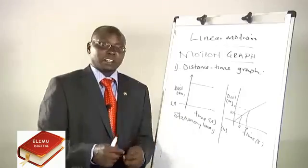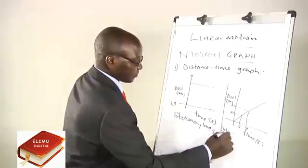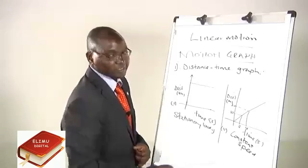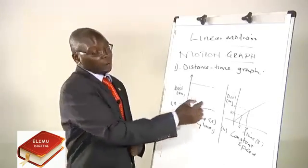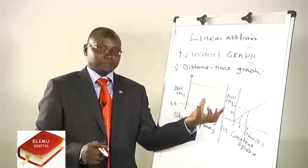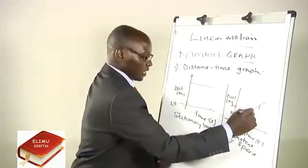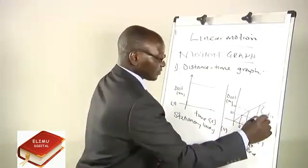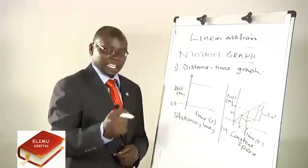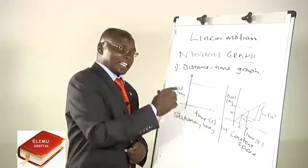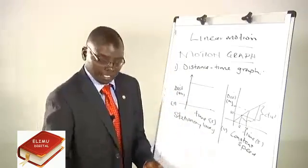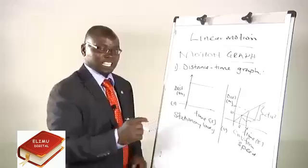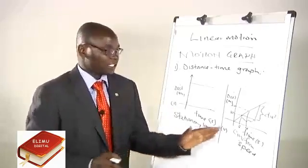Such a graph represents a body moving with constant speed, because the gradient gives us the speed. The change on the y-axis is distance, and the change on the x-axis is time. The gradient is uniform, so this is a body moving with uniform speed throughout — the rate of change of distance with time is the same.